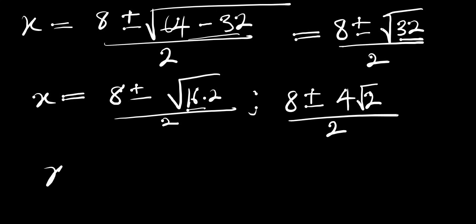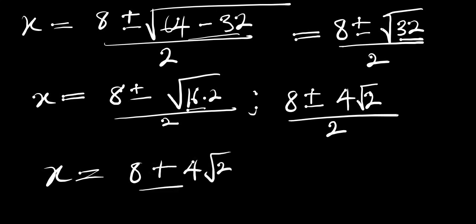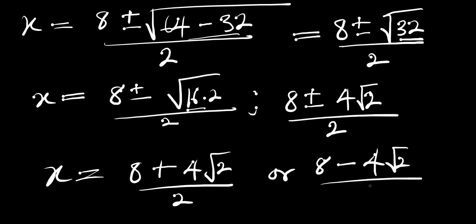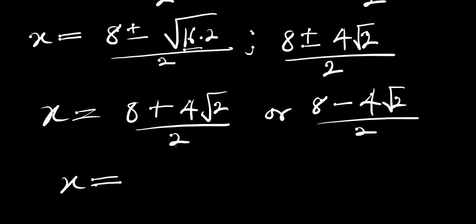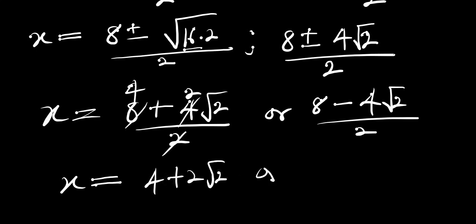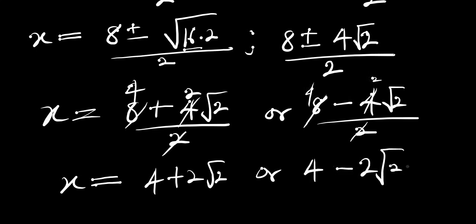So we have x equals two solutions: 8 plus 4 root 2 divided by 2, or 8 minus 4 root 2 divided by 2. Simplifying by cancelling, this gives us x equals 4 plus 2 root 2, or 4 minus 2 root 2. So we have these two values for x.